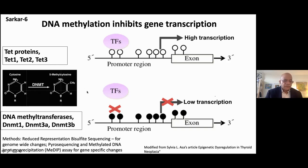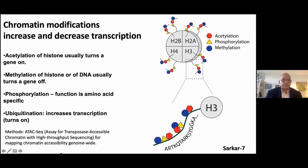To study gene methylation, there are various techniques available. For genome-wide methylation, one can use Reduced Representation Bisulfite Sequencing, or RRBS. For methylation of a specific promoter, the most specific and quantitative measurement is pyrosequencing. There is also the MeDIP assay — methylated DNA immunoprecipitation assay — which determines gene-specific methylation changes.